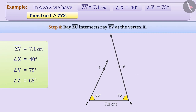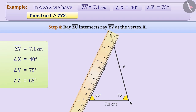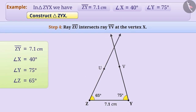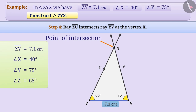Step 4: To know the exact location of vertex X, with the help of a ruler, we will extend ray ZU so that it intersects with ray YV at a point. This point of intersection is the vertex X of triangle ZYX. We have obtained triangle ZYX, where ZY is of length 7.1 cm, angle Z measures 65 degrees and angle Y measures 75 degrees.